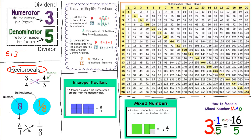Reciprocals just means flip. You're basically flipping the number — if you have 3/4, you flip it and your reciprocal is 4/3. If you have a whole number, you change it to a fraction by putting a fraction bar under it and adding a one. So the reciprocal of 8 over 1 is 1 over 8.